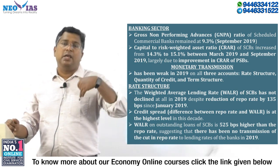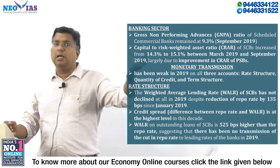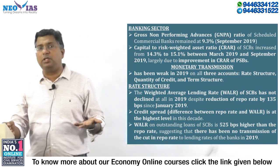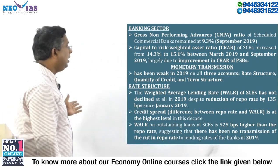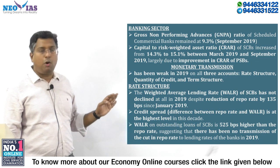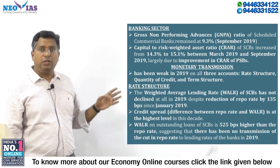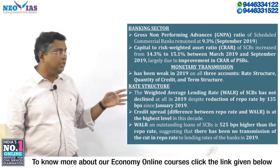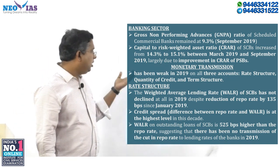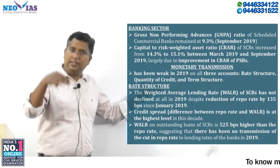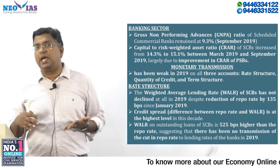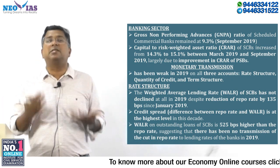In the last few years, monetary transmission has been ineffective. When RBI cut rates in 2019 by more than 100 basis points, only nearly 40% of that cut was passed on as lending rate reductions by banks. The economic survey says that in 2019, monetary transmission has been weak on three counts: rate structure, quantity of credit, and term structure.